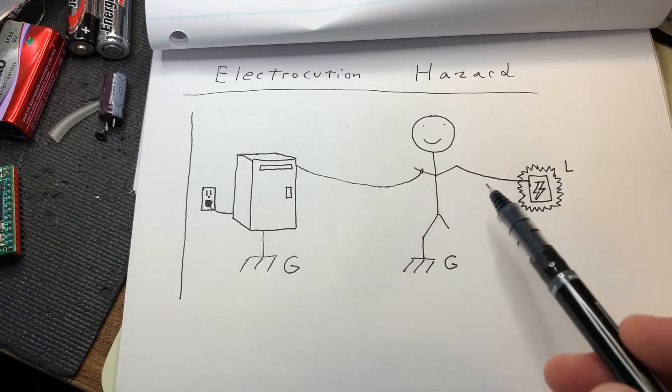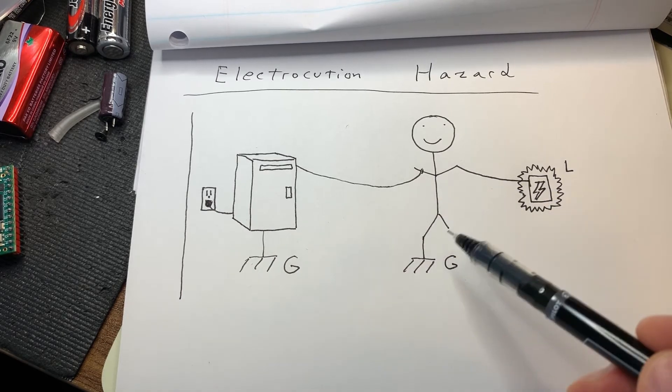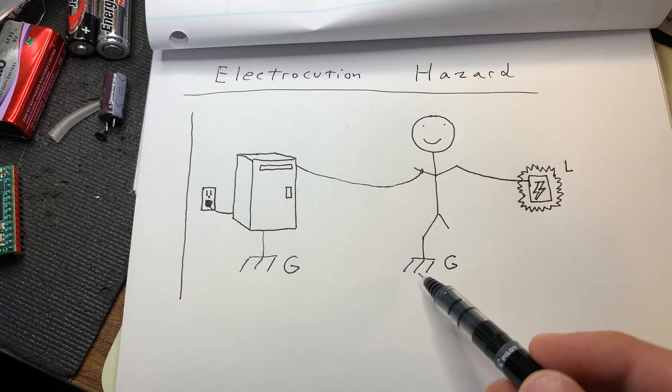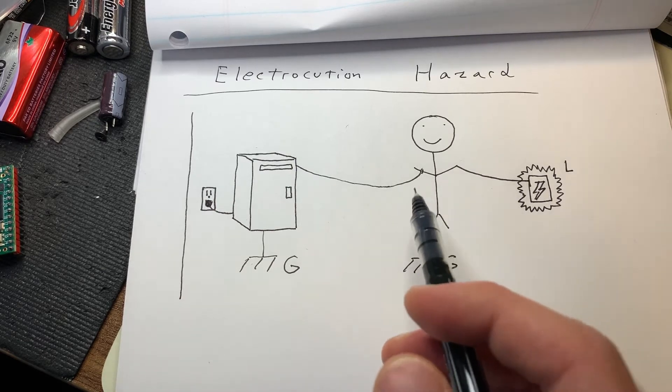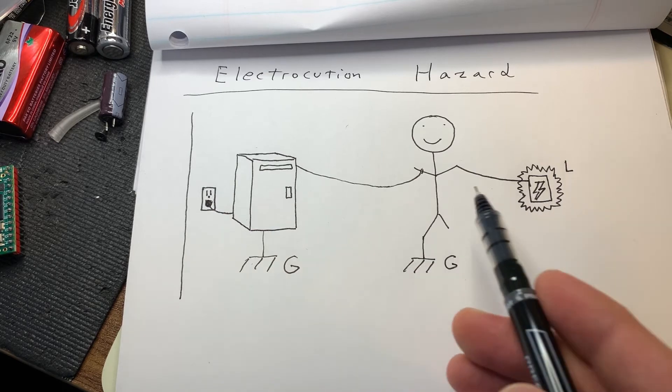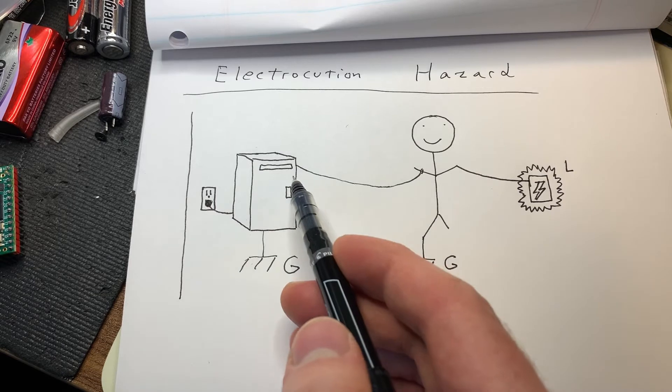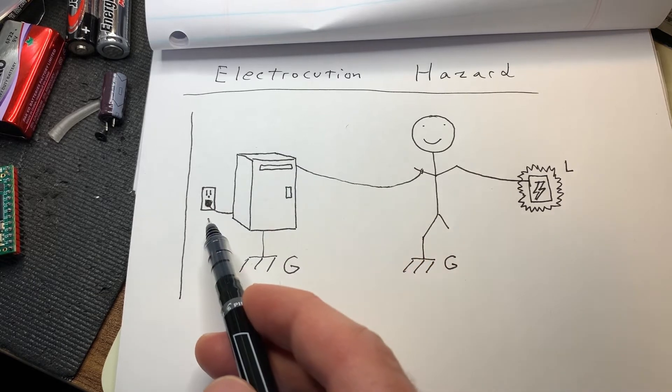And typically, if you touched something that was live, there's a potential that you could get electrocuted just from standing on the floor. You know, eventually it's going to lead back to ground in some way, but it's even more dangerous in this scenario because now you have this path where you have your arm directly connected to this computer, which is plugged in to ground.